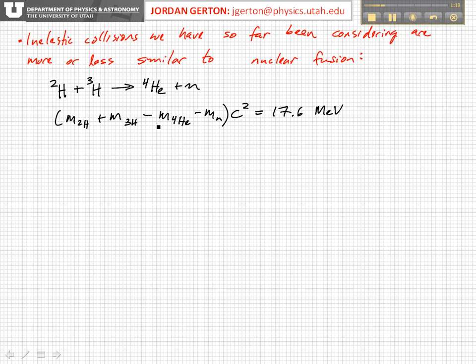you get something like 17.6 mega electron volts. What that means is the products, the helium-4 and neutron, have smaller internal energies. The internal energies of the products are smaller than the internal energies of the reactants by this much.